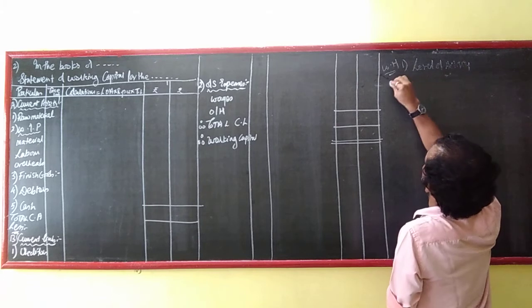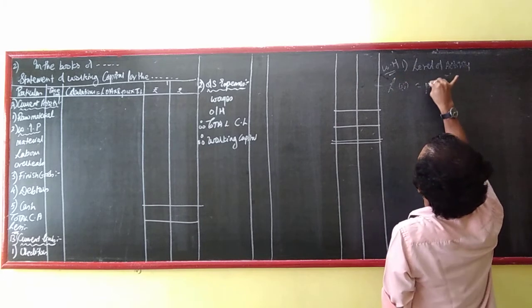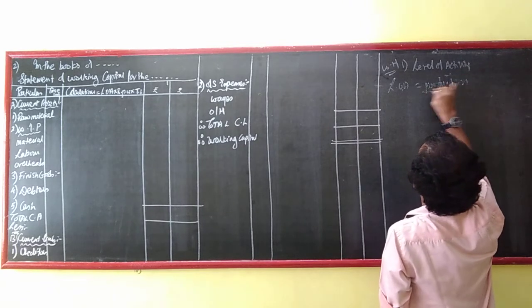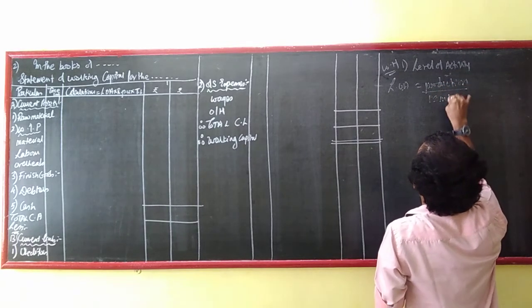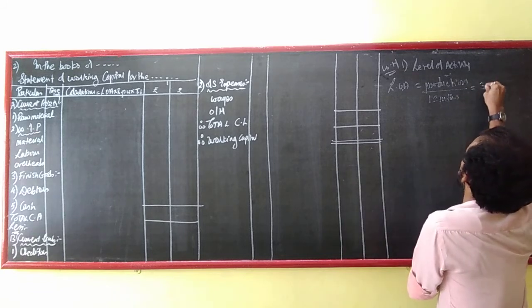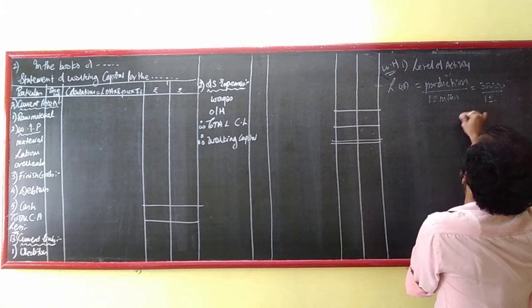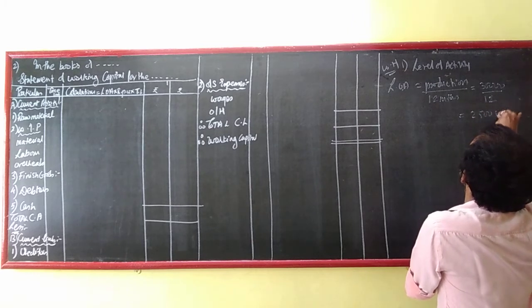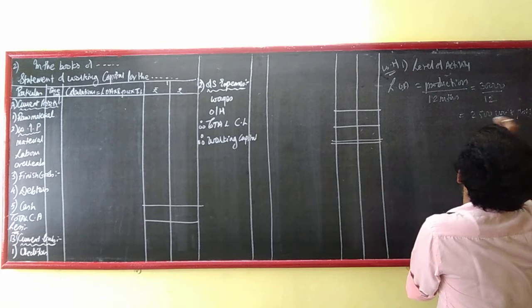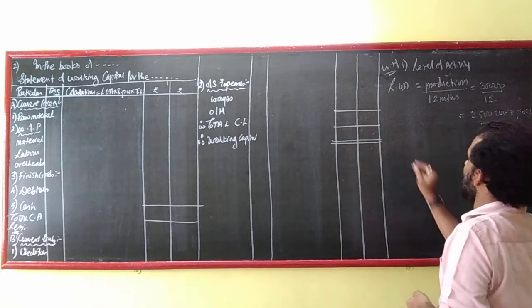Level of activity: we take production for the year and divide by 12. So 30,000 divided by 12 equals 2,500 units per month.